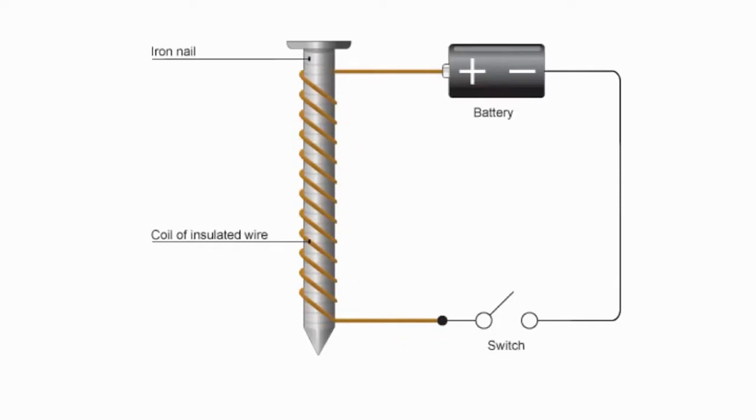Anytime an electrical current flows through a wire, the wire gets a magnetic field. This magnetic field is usually pretty weak, but we can make it stronger by increasing the amount of electricity flowing through the wire or by coiling the wire many times to amplify that magnetic field.